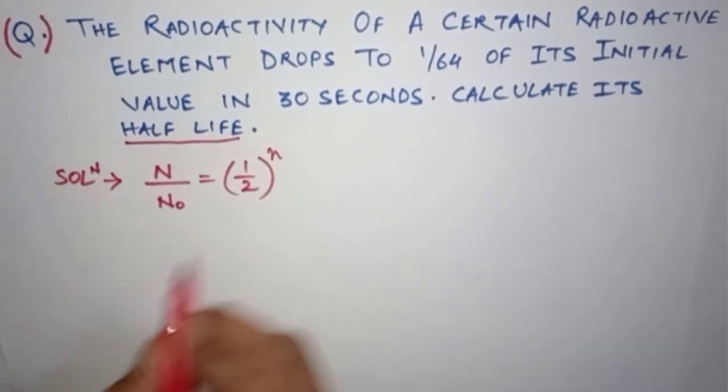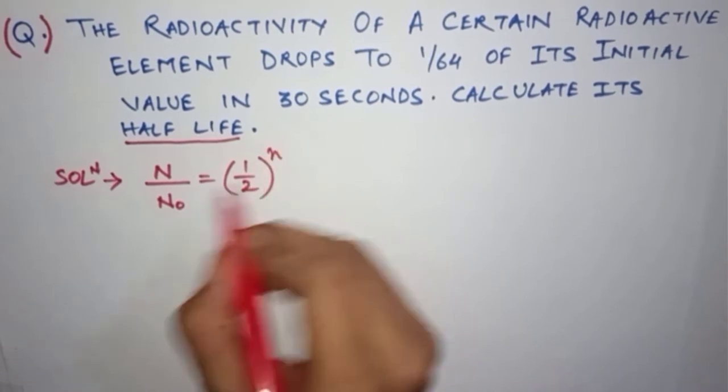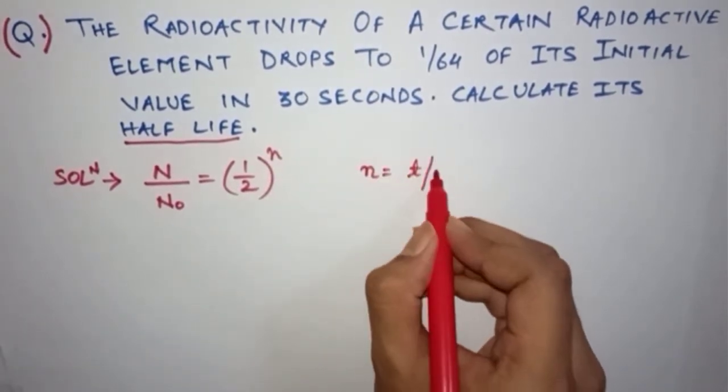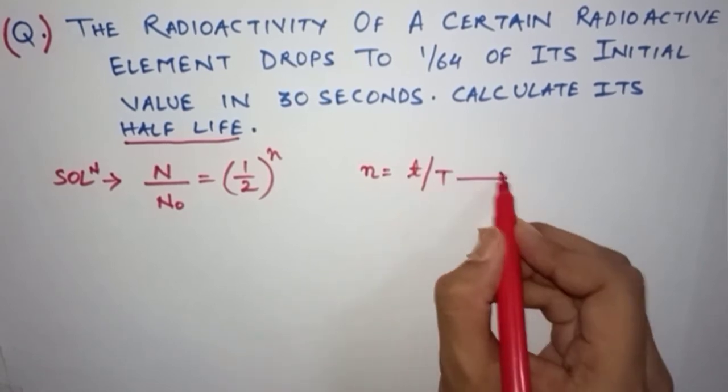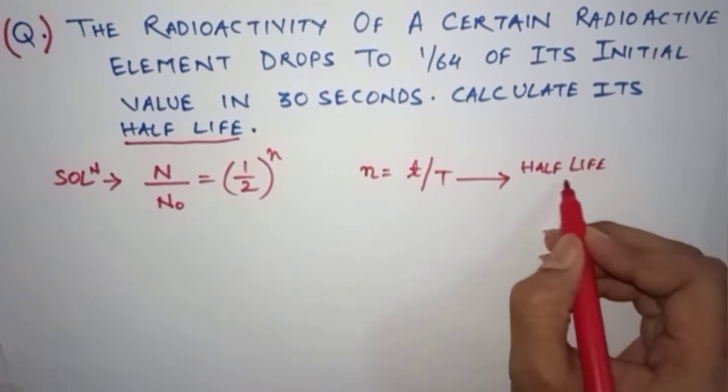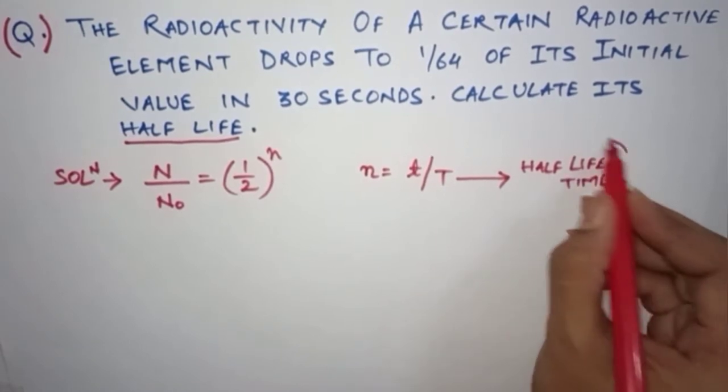But what is this n? We have to know n before knowing the capital N by N₀. So the small n is equal to small t by capital T. And what is capital T? Capital T is our hero - that is the half-life time. So that's the actual motive.